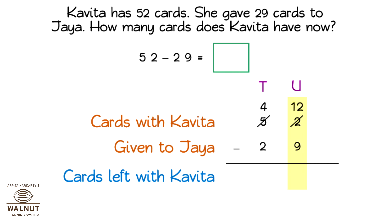Let us see how to do that. Let's break apart one ten and give it to the units. We change the values in the tens and units place. Now, we can subtract. We can subtract the units and then we subtract the tens. That gives us the final answer. So, 52 minus 29 is equal to 23.